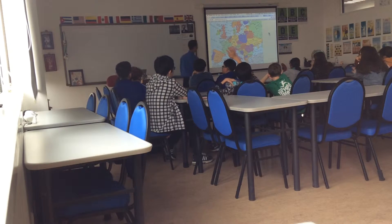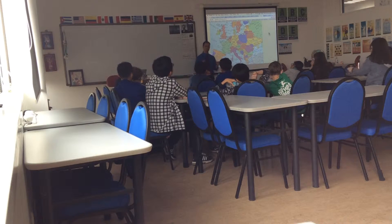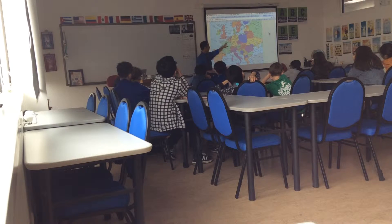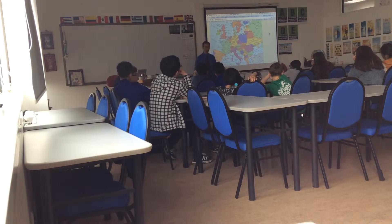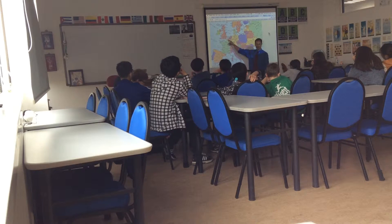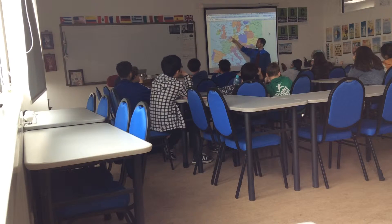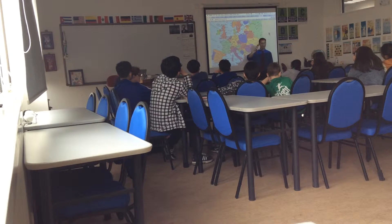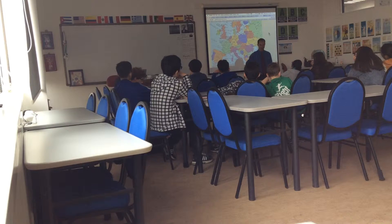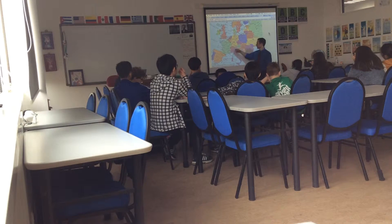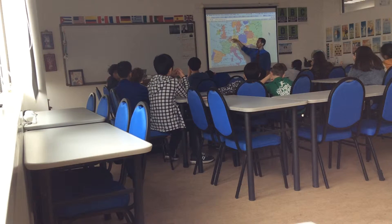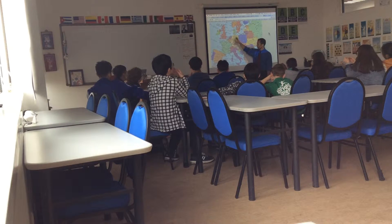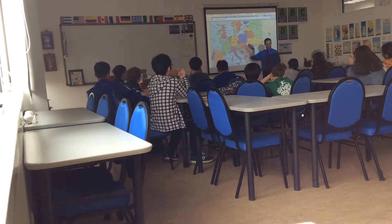Belgium is part of a region — an area that shares common characteristics — called Benelux. Belgium. The 'Be' is Belgium, 'Ne' is Netherlands. Sometimes people call it Holland, but Holland is actually a special region within the Netherlands. Belgium, Netherlands. Benelux. Luxembourg — this little tiny country here, called a microstate. There are a few tiny countries in Europe.